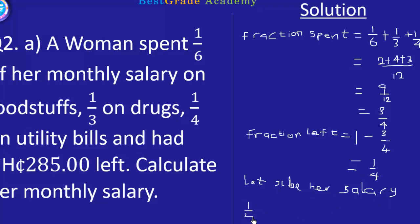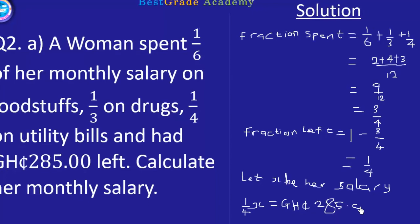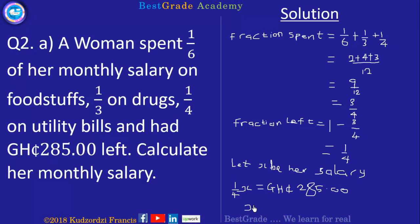So 1/4 times x will correspond to the amount that is left, which is 285 Ghana cedis. This can also be done using ratio and proportion. When you multiply 285 by 4, we are going to obtain 1140 Ghana cedis.